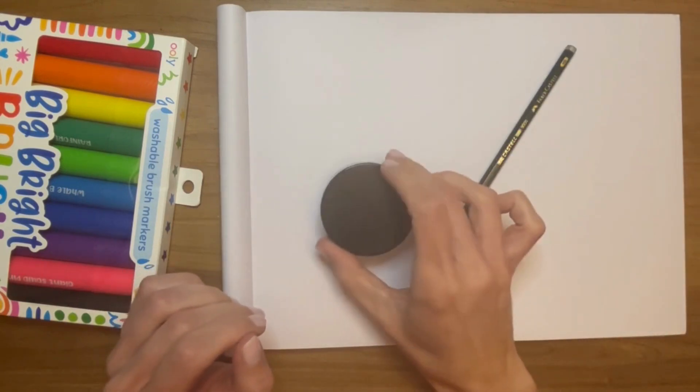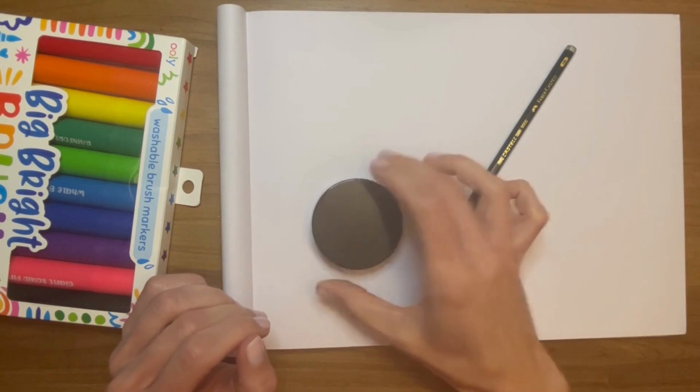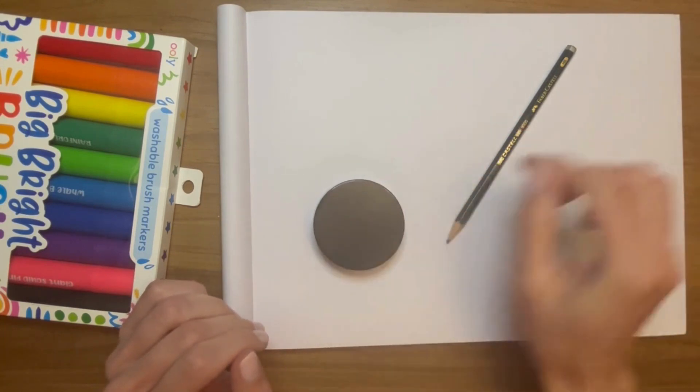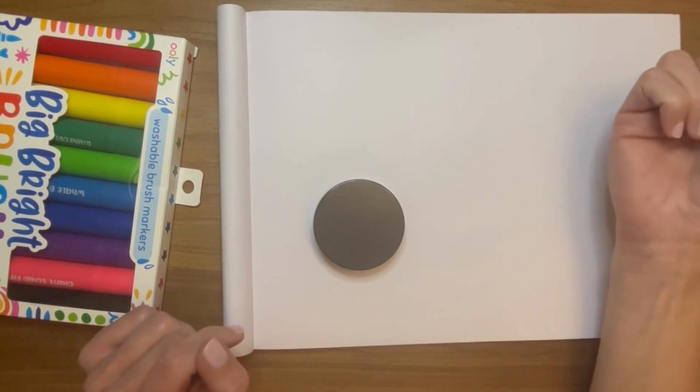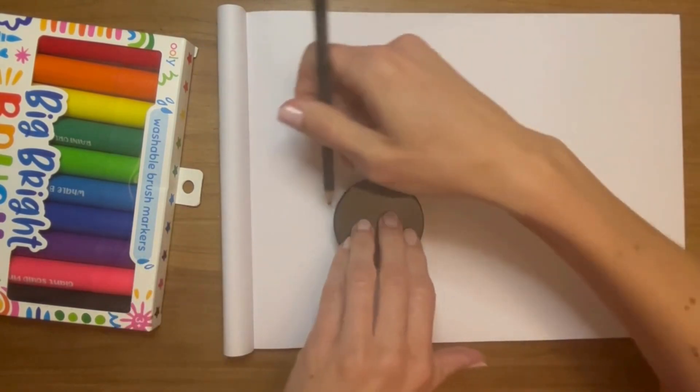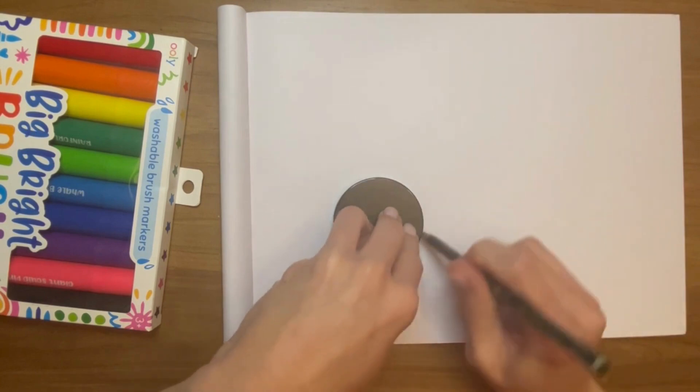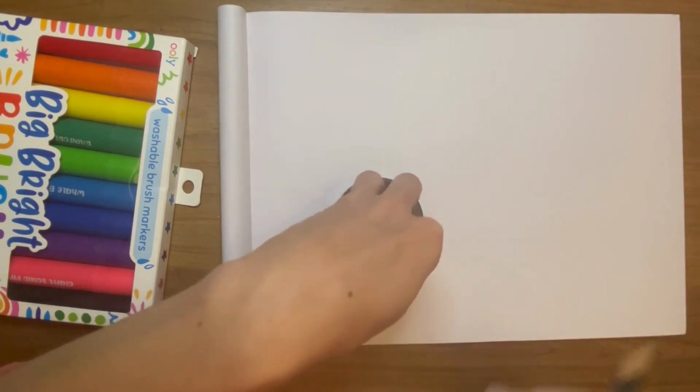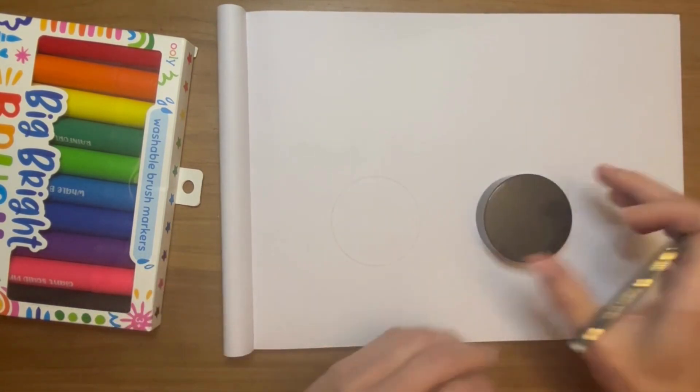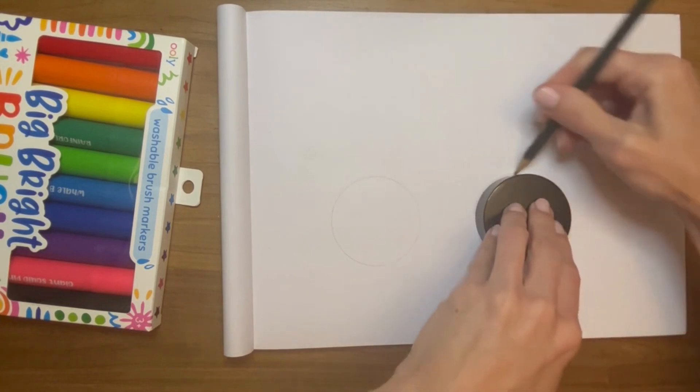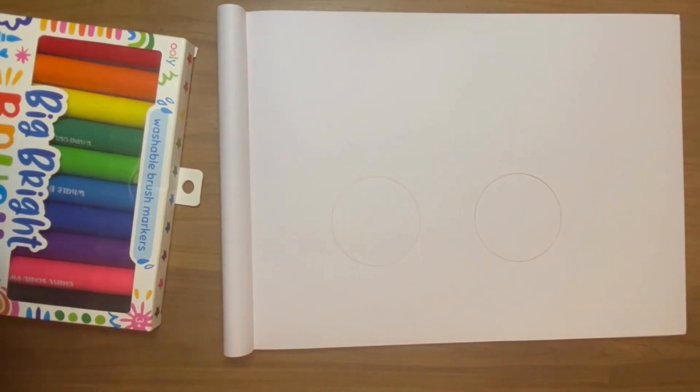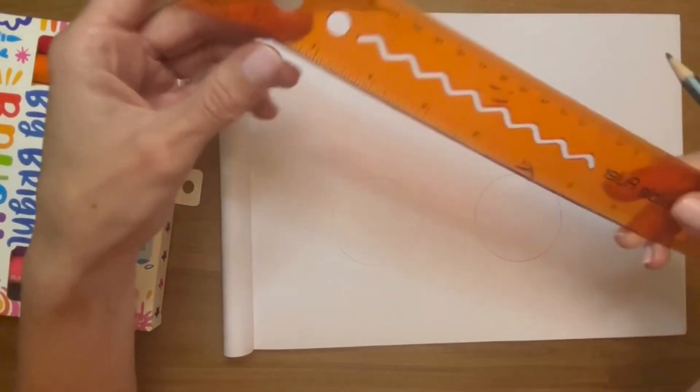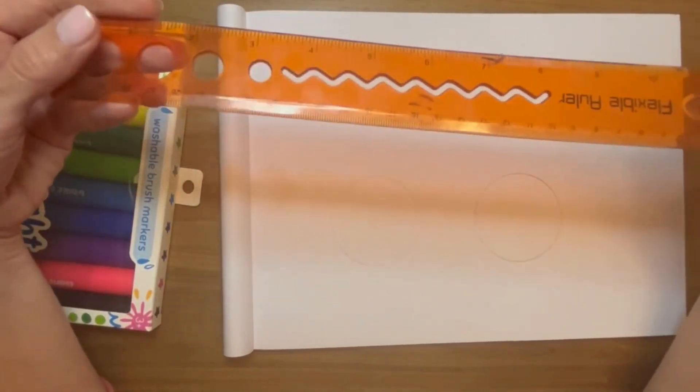What we're going to do today is use like a cap to make the wheels and a pencil. We're going to give it a try. First thing we're going to do is draw two circles. Next, if you have a ruler you can use a ruler. I'm not going to use one, but it may make it easier for you.